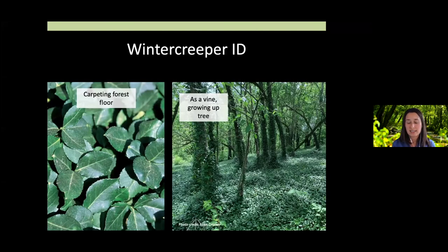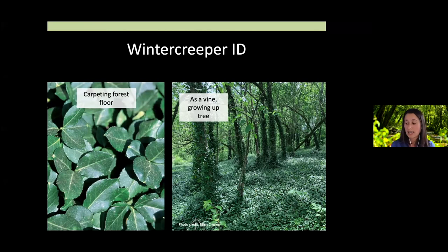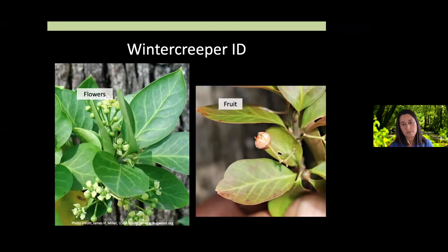Here's a setting in a park in Lexington, Kentucky — you can see winter creeper growing as a vine up trees. It may not directly hurt those trees, but it could overtop and weigh them down, increase the risk of wind throw in a major storm, and certainly carpets the ground preventing other plants from popping up.